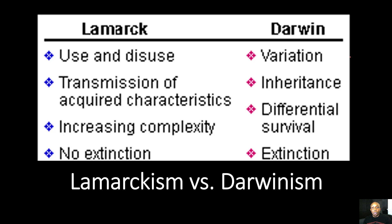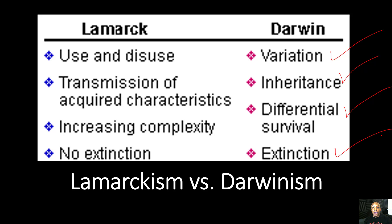Now let's take a look at Darwin's theory of evolution. Darwin believed in genetic variation — there's a large variety of genetic variation within the human population, which is why people look so many different ways. The more genetic variation a species has, the better chances for survival it will have. Darwin also believed in genetic inheritance, meaning we inherit traits from our parents and grandparents, passed down from generation to generation. He also believed in differential survival — survival of the fittest — where organisms best suited to adapt in their environment survive and pass on their genes to offspring.